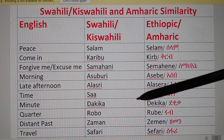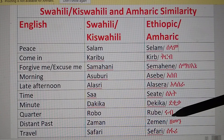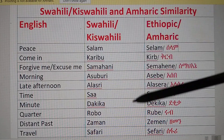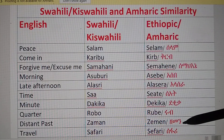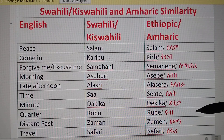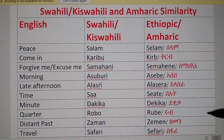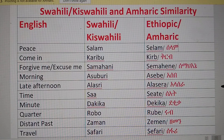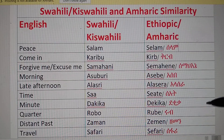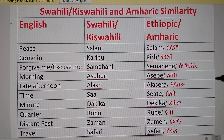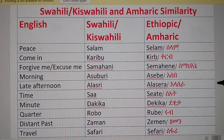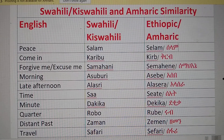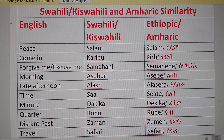'Distant past' in Swahili is 'Zaman,' and in Amharic it is also 'Zaman.' 'Travel' in Swahili is 'Safari,' and in Amharic a similar word is also 'Safari.' In Amharic, safari means comfort or being located somewhere — you travel to a place and camp or stay there. So safari and safari come from the same word.